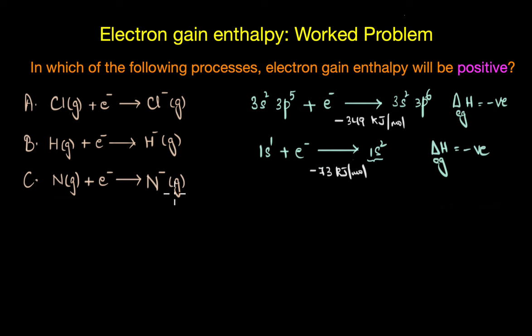Alright let's look at the last option. The outer electronic configuration of nitrogen is 2s2 2p3. And on adding an electron we get 2s2 2p4. So here we are going from a stable half filled 2p3 electronic configuration to a less stable state.